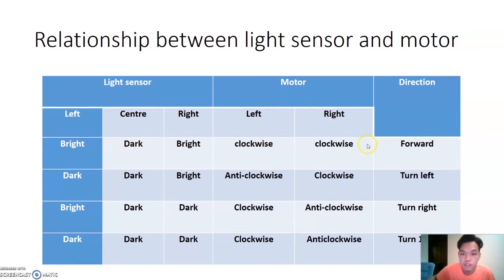In the second condition, the robot wants to turn left. In this condition, the left and center light sensor sense a black line, while the right light sensor does not sense anything. So the left motor will move anti-clockwise and the right motor will move clockwise. So the robot will turn left.